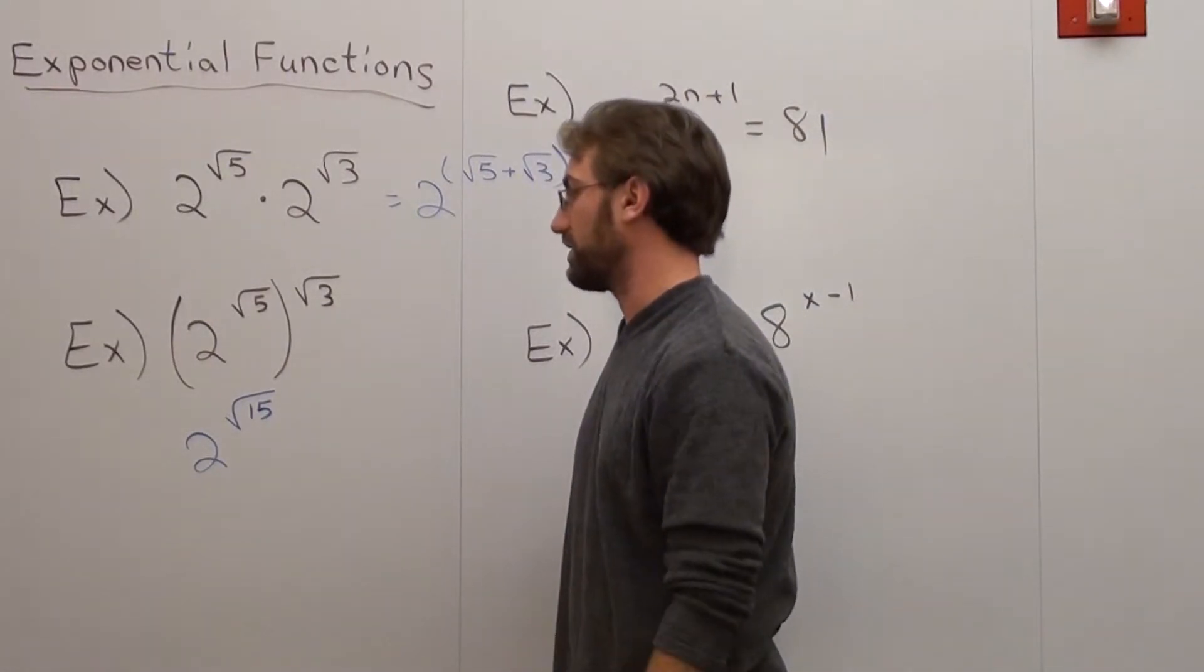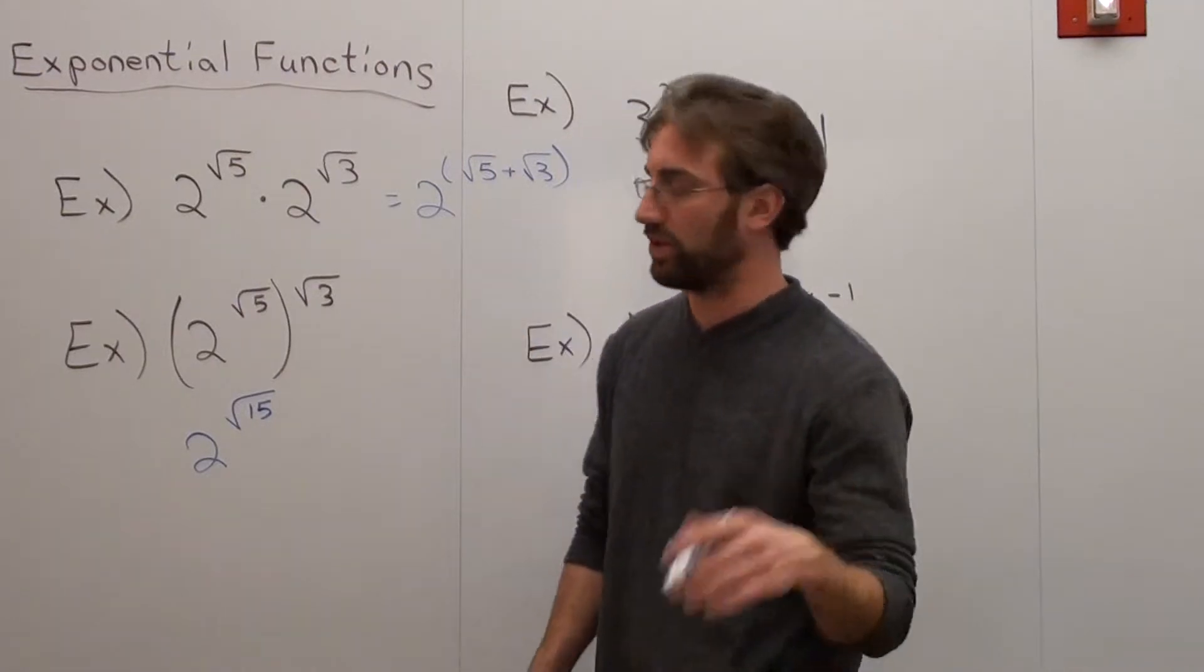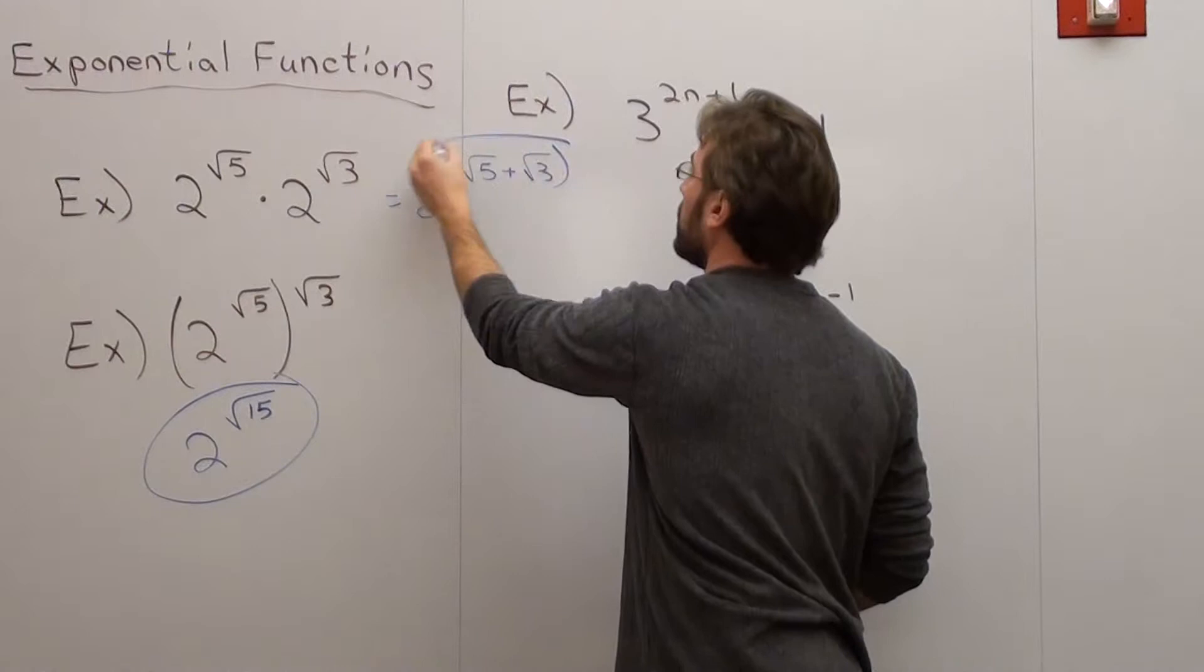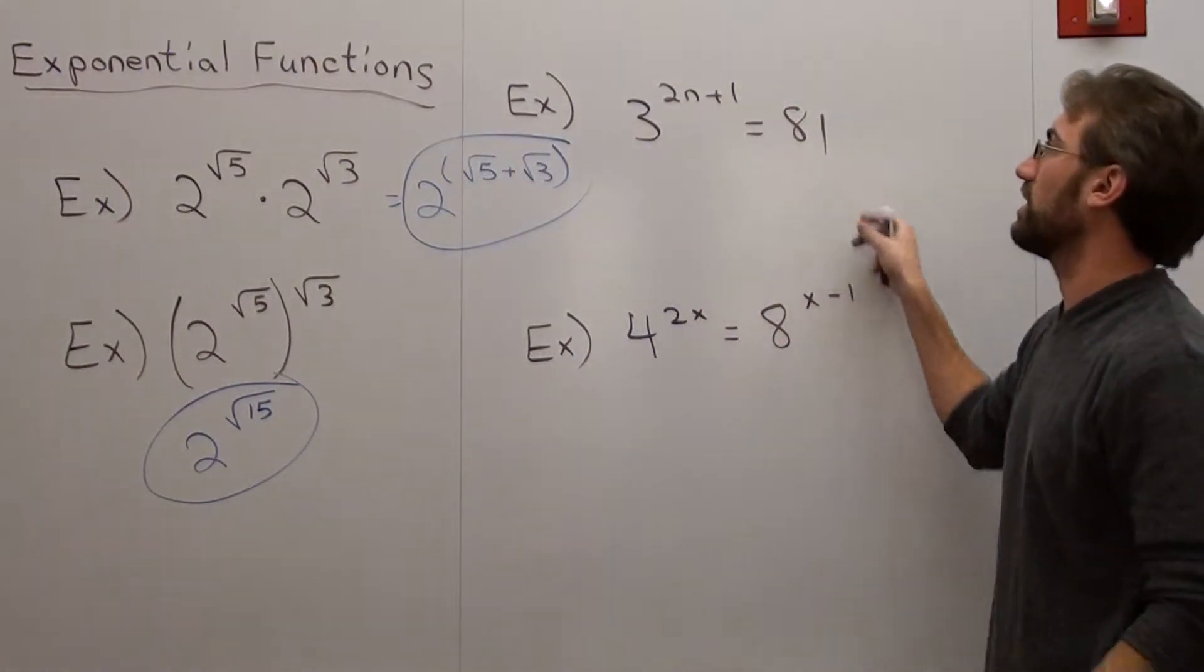That's pretty much all there is to it. That's all you really need to do right there. And that's all you need to do right there. Now if I look at this next one, 3 to the 2n plus 1 equals 81.